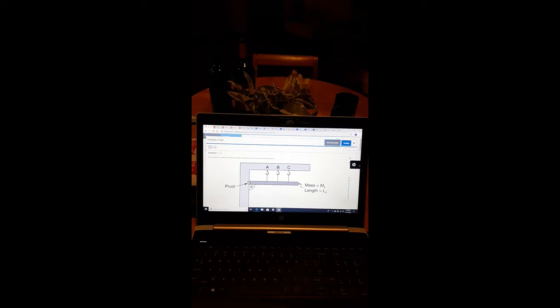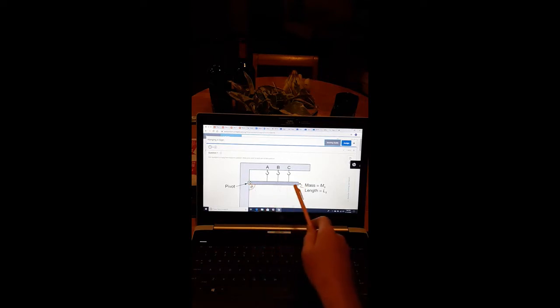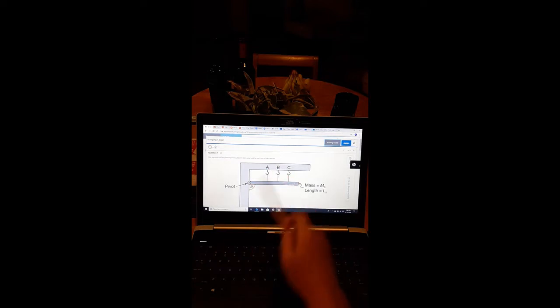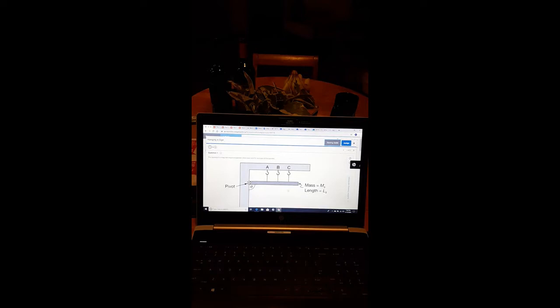Hi, this is Mr. Heinrich with another AP Physics Classroom FRQ. We're looking at AP Physics 1, Unit 7, FRQ 1, and we have this sign that's being suspended from one of three points, A, B, or C. It's not suspended from all three at the same time. We have a mass of MS, a length of LS, and we have an angle of theta.